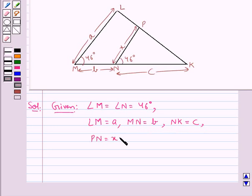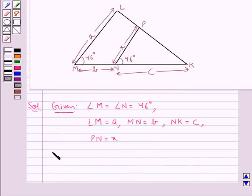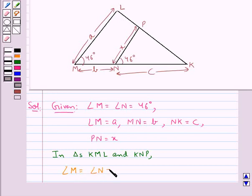And we have to express x in terms of a, b and c. Let's consider the triangles KML and KNP. In triangles KML and KNP we have angle M is equal to angle N which is equal to 46 degrees. This is already given to us.